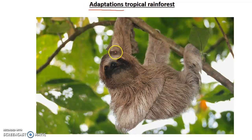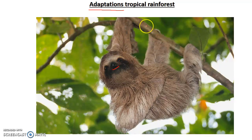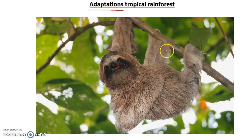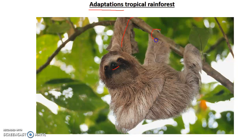Here we have a sloth, which has adapted to live in a tropical rainforest for a number of reasons. It is adapted to survive in the harsh conditions of being very wet, very warm, and having lots of trees. It is designed to live in tree environments, as indicated by its very long arms and its rounded feet.